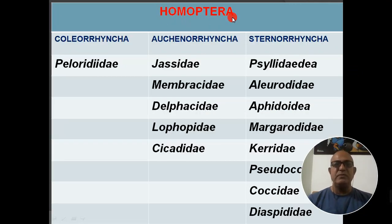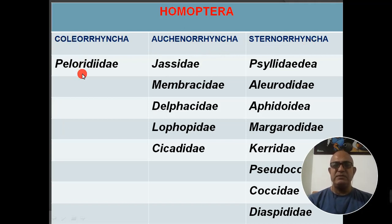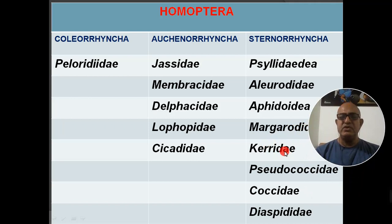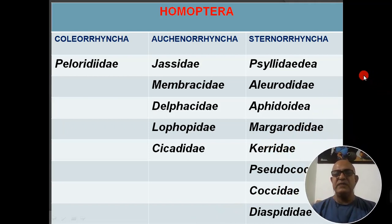The first group is Homoptera. Homoptera contains three sub-orders: Coleorrhyncha, Auchenorrhyncha, and Sternorrhyncha. Coleorrhyncha has one family: Peloridae. Auchenorrhyncha has five families: Jassidae, Membracidae, Delphacidae, Lophopidae, and Cicadidae. Sternorrhyncha has eight families: Psyllidae, Aleyrodidae, Aphidoidea, Margarodidae, Kerriidae, Pseudococcidae, Coccidae, and Diaspididae. I will describe the salient features and one example with photographs for all these families.